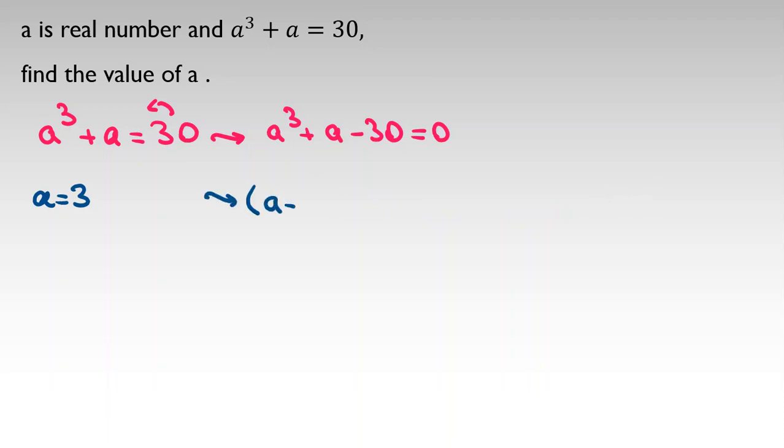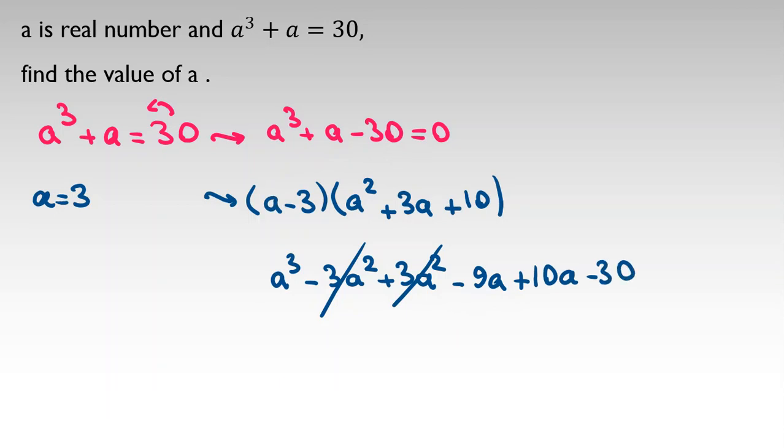Now that we found a = 3 is a root, we can find one factor: a minus 3. To create a cubed plus a minus 30, I place a squared here, then minus 3a squared. I should place plus 3a to cancel that minus, giving minus 9a. We need plus 10a, so I place plus 10 here, giving plus 10a minus 30.